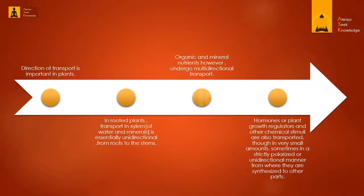Direction of transport is important in plants. In rooted plants, transport in the xylem of water and minerals is essentially unidirectional, from roots to the stems. Organic and mineral nutrients, however, undergo multi-directional transport.